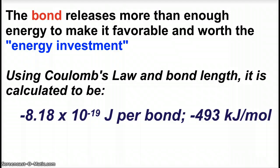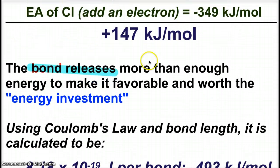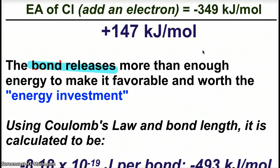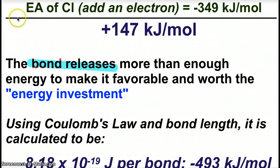Using Coulomb's Law and bond length, this is calculated that it's negative 8.18 times 10 to the negative 19th joules per bond. Or negative 493 kilojoules per mole. So, again, this is how much energy the bond releases in an effort to make up for the investment of that 147 kilojoules per mole that we had to put in to form the ions. And I'm going to show you a diagram here where these numbers all go together and perhaps make it a little easier to understand.